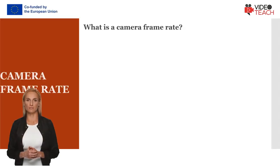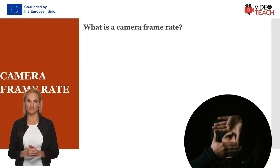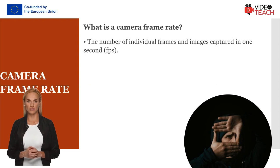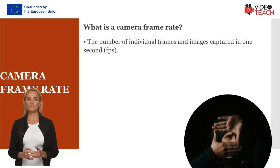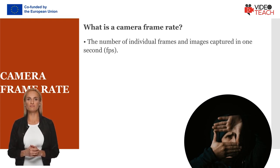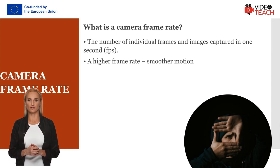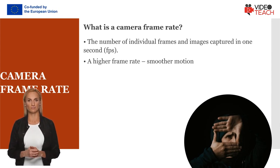What is a camera frame rate? Camera frame rate refers to the number of individual frames and images captured in one second by a camera. It is measured in frames per second, or fps. A higher frame rate results in smoother motion in videos, and a lower frame rate creates a more artistic video.